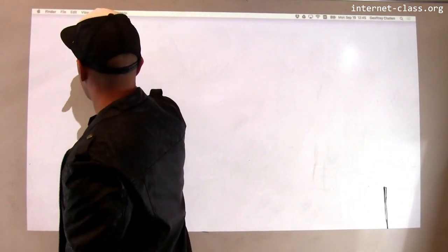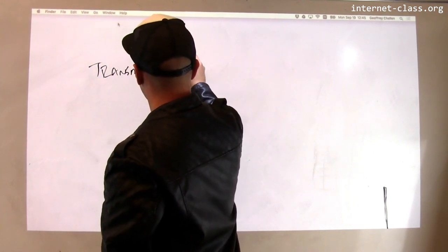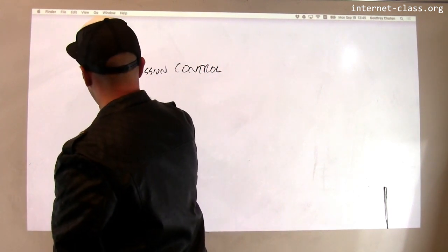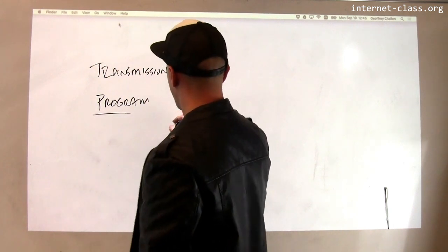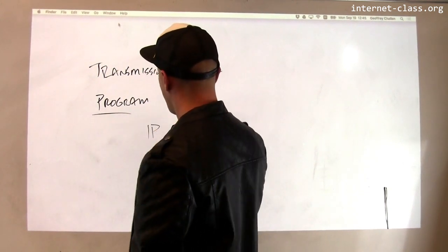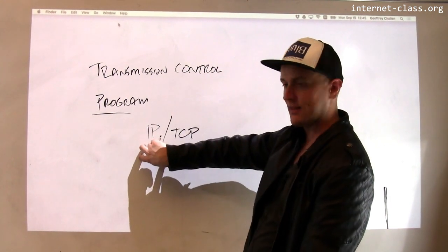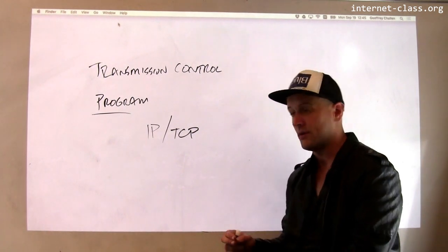But that stood for the transmission control program. The original transmission control program included both aspects of IP and TCP - features that are now done at the IP level and things that are implemented by the transmission control protocol now.